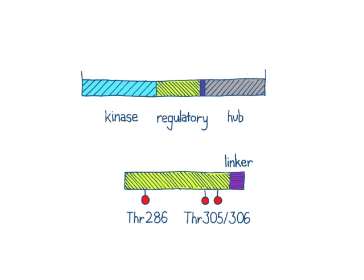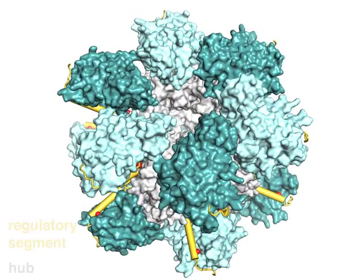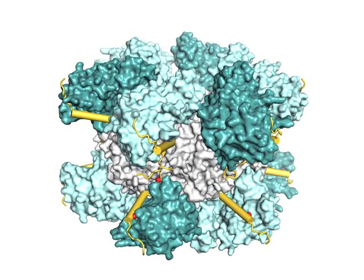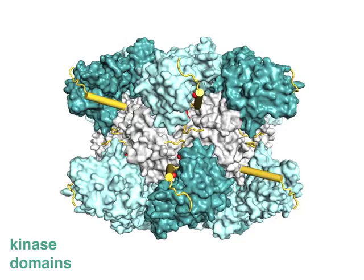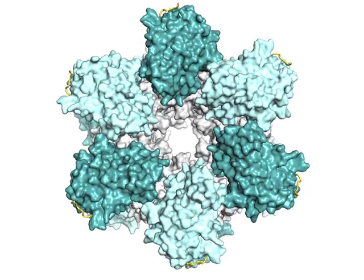In the crystal structure, a portion of the regulatory segment is incorporated into the hub domain itself. Extensive interactions are observed between the kinase and the hub domains. This structure reveals a compact assembly with the calmodulin binding regions completely sequestered.